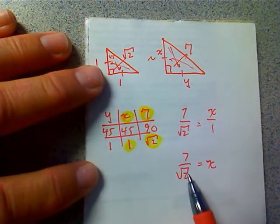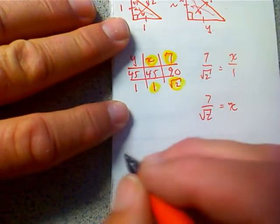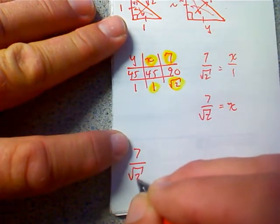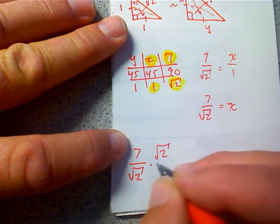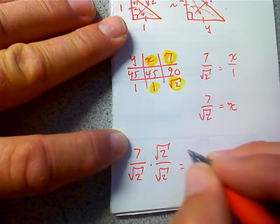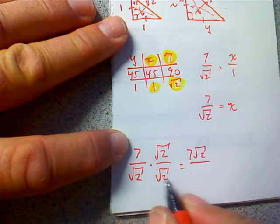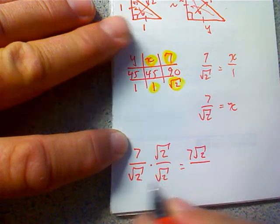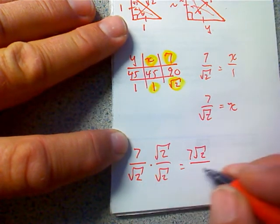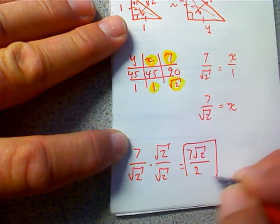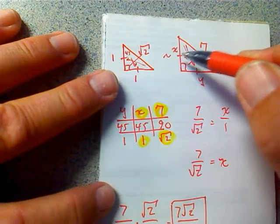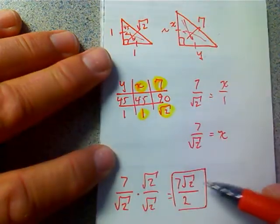Now, I need to rationalize it because I don't like this square root on the bottom, so I'll do that over here. 7 over the square root of 2, multiply it by the square root of 2 over the square root of 2. And that's 7 square root of 2 over the square root of 2 times square root of 2, which is the square root of 4. The square root of 4 is 2. So this side right here, the X, is going to be 7 root 2 over 2.